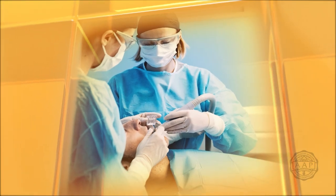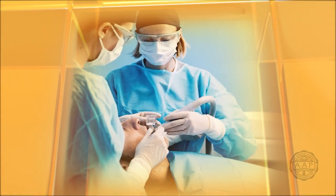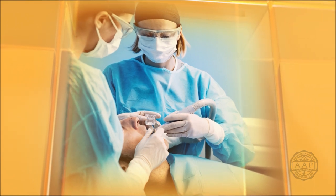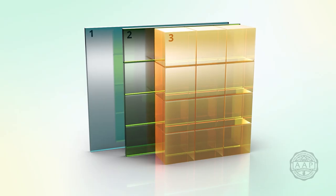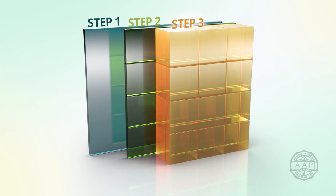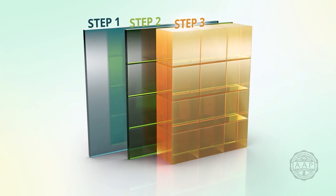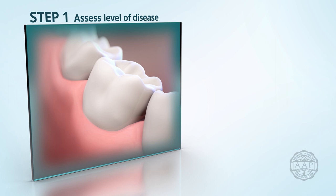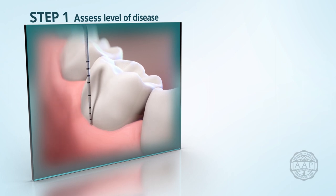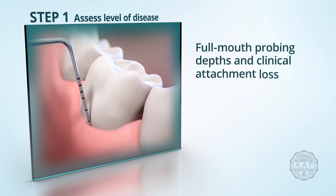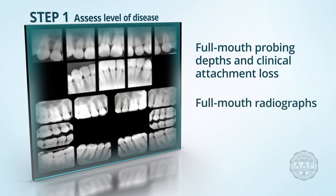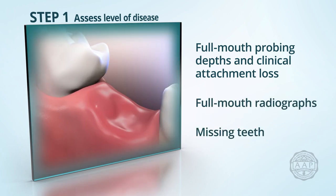It also highlights the individualized and complex nature of the disease in each patient and his or her expected response to treatment. There are three steps to staging and grading a patient. Step 1: Assess the level of disease. The clinical examination still utilizes full mouth probing depths and clinical attachment loss, full mouth radiographs, and missing teeth due to periodontitis.